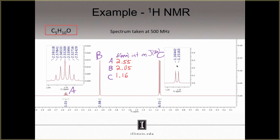Chemical shift is done. Now let's move on to integration. Signal A has an integration of 1. Signal B has an integration that rounds to 3. And signal C has an integration of 6. Now let's move on to multiplicity. Signal A has 7 peaks, making it a septet. Signal B has only one peak, so it's a singlet. And signal C has two peaks, so it's a doublet.